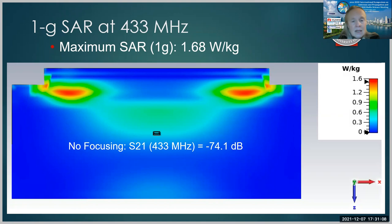Now, in the case where we have no focusing, the S21, the transmission between the external coil, which is port one, and the internal implant, which is port two, at 433 megahertz is minus 74 dB. Not very high, but considering that we have a large amount of lossy body, understandable.